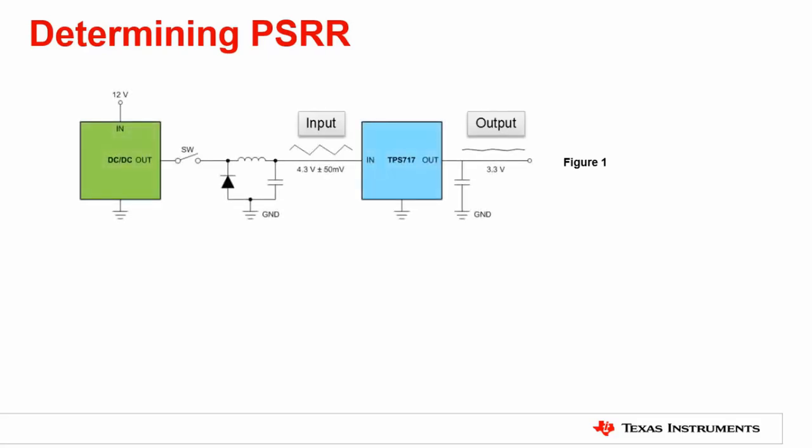We will now go over how to determine PSRR in your application. In this example, we will use figure one, which shows a DC-to-DC converter that is regulating 4.3 volts from a 12-volt rail. For the LDO, the TPS717 — a high PSRR LDO — will follow the DC-to-DC converter by regulating a 3.3-volt rail. The goal of having a high PSRR on an LDO is to get a flat DC signal at the output of the TPS717. The ripple being generated is 50 millivolts on the 4.3-volt rail at the output of the DC-to-DC converter.